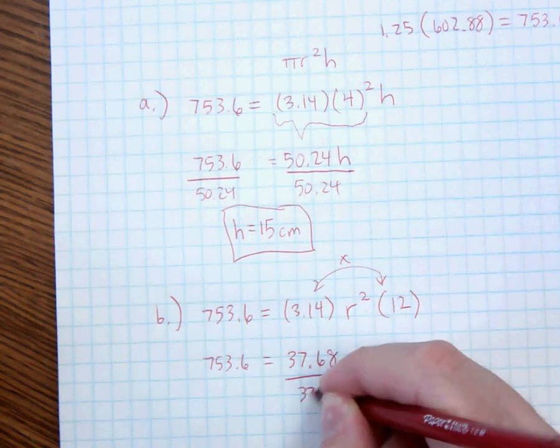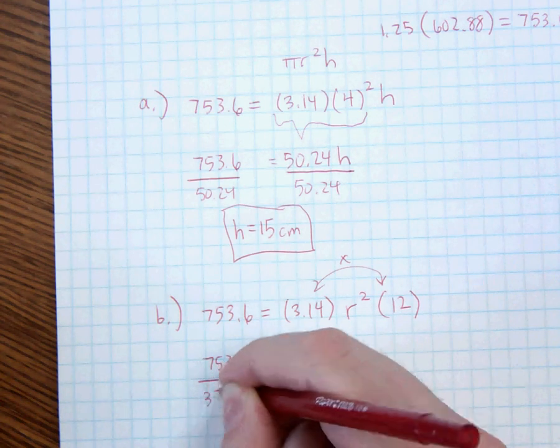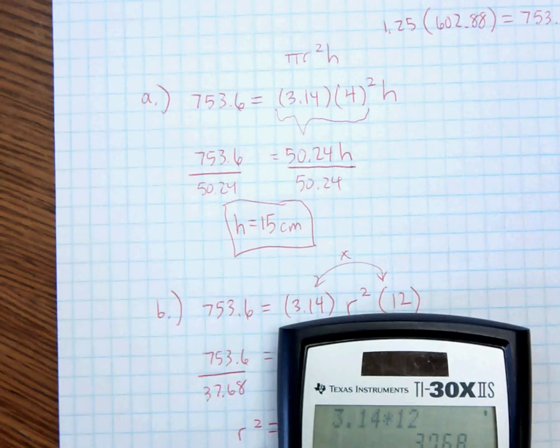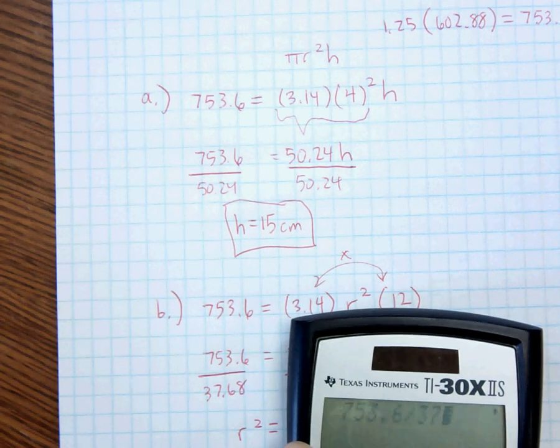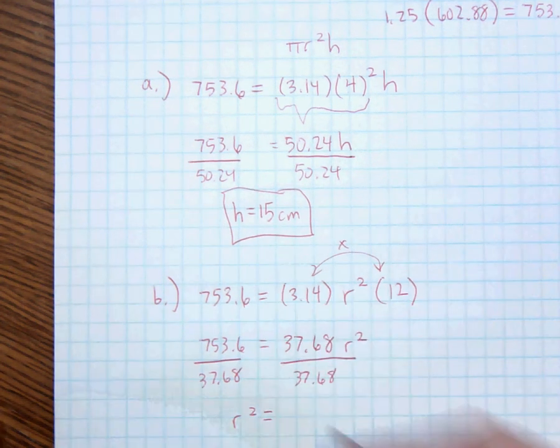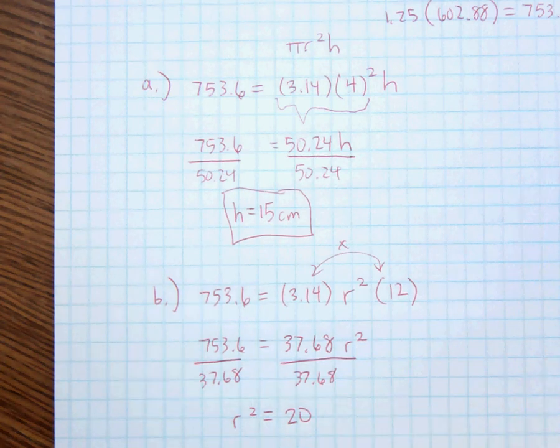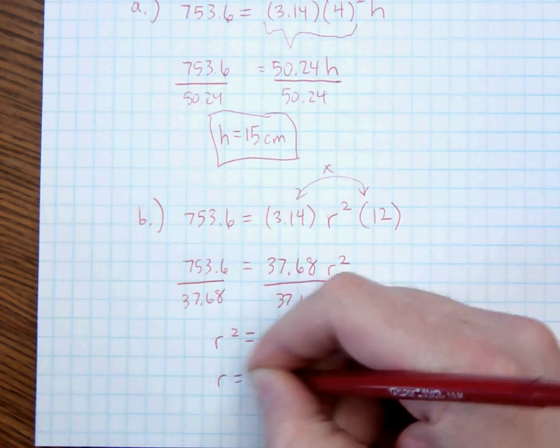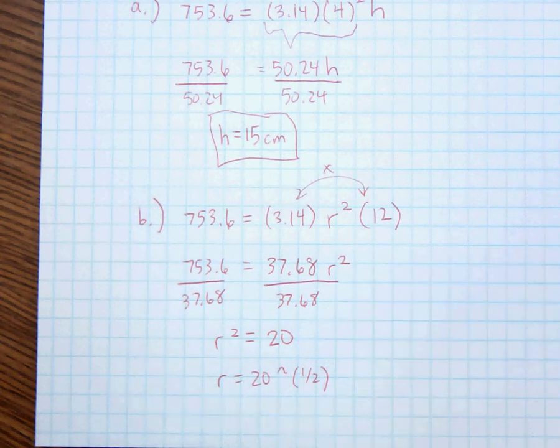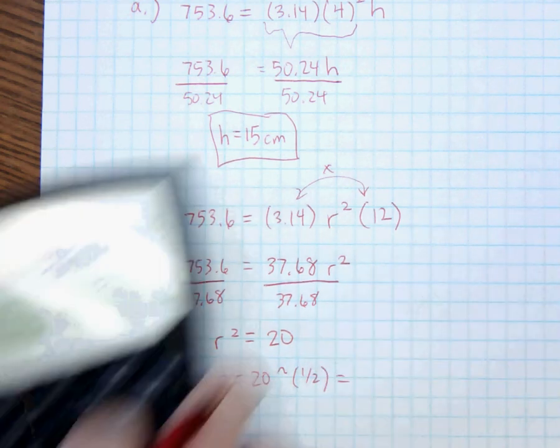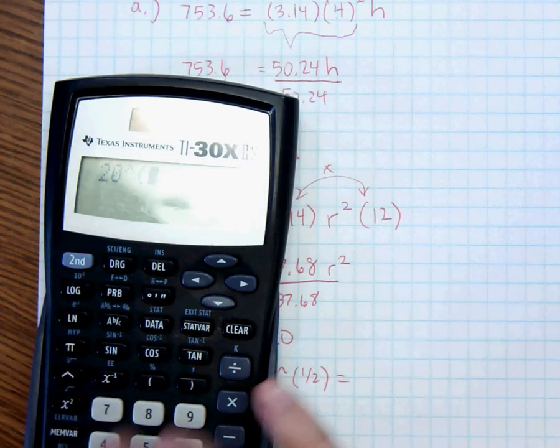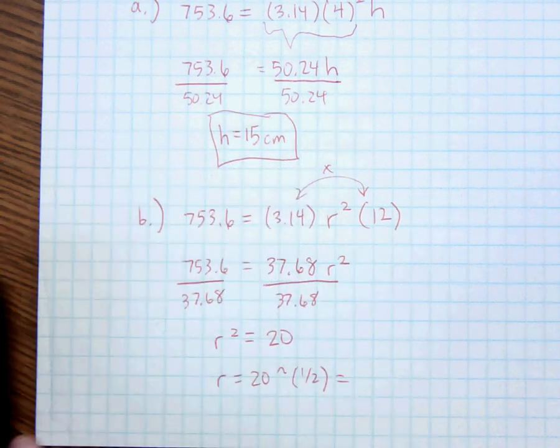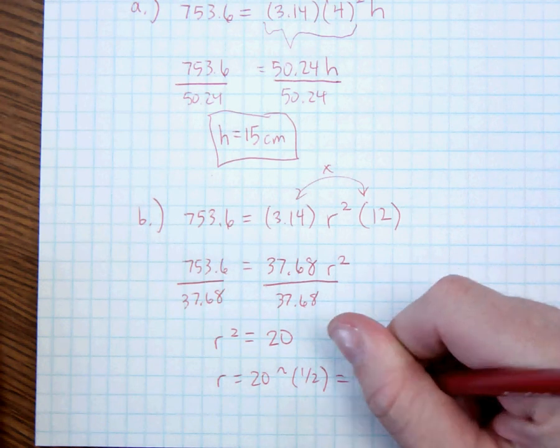I'm going to divide, and I get r squared is equal to 753.6 divided by 37.68, which equals 20. So, since r squared is 20, the way to solve for r is to take the square root. r is equal to 20 to the power of 1 half, which equals 4.47, but we round to the nearest tenth, so that becomes 4.5, 4.5 centimeters. And that is number 11.